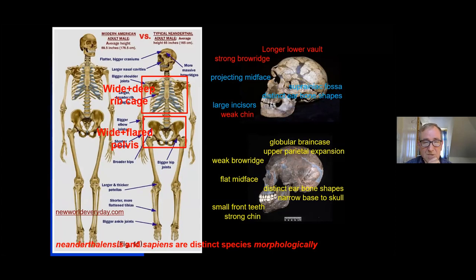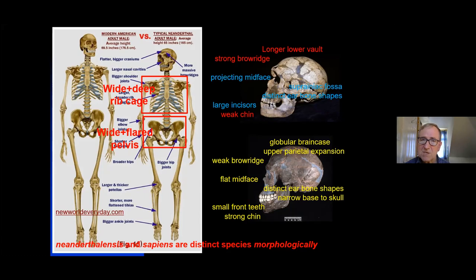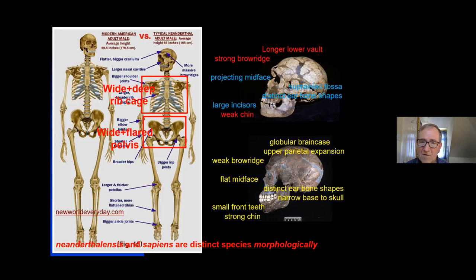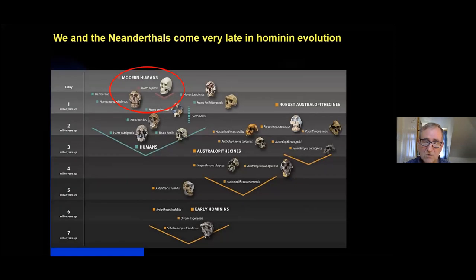I agree with King that the Neanderthals are a distinct species morphologically from us. Looking at a composite Neanderthal skeleton, we can see differences compared with apomorphic Homo sapiens: a wide and deep rib cage, wide and flared pelvis, larger joint surfaces. In the skull and jaw: a longer lower cranial vault, large brow ridge, weak chin — all plesiomorphic features. But also distinctive features: the projecting middle of the face, a suprainiac fossa at the back, distinctive ear bone shapes, and large incisors at the front. There is enough morphological difference to mark off the Neanderthal lineage as distinct from our own — enough to continue calling them a distinct species.